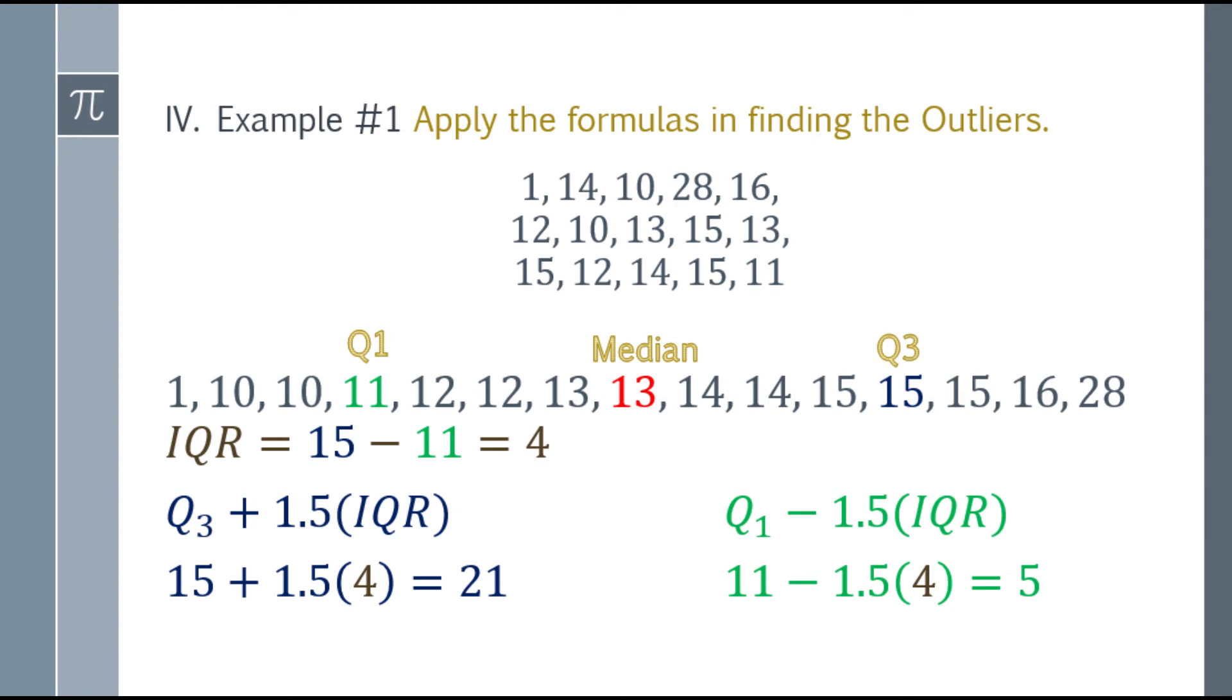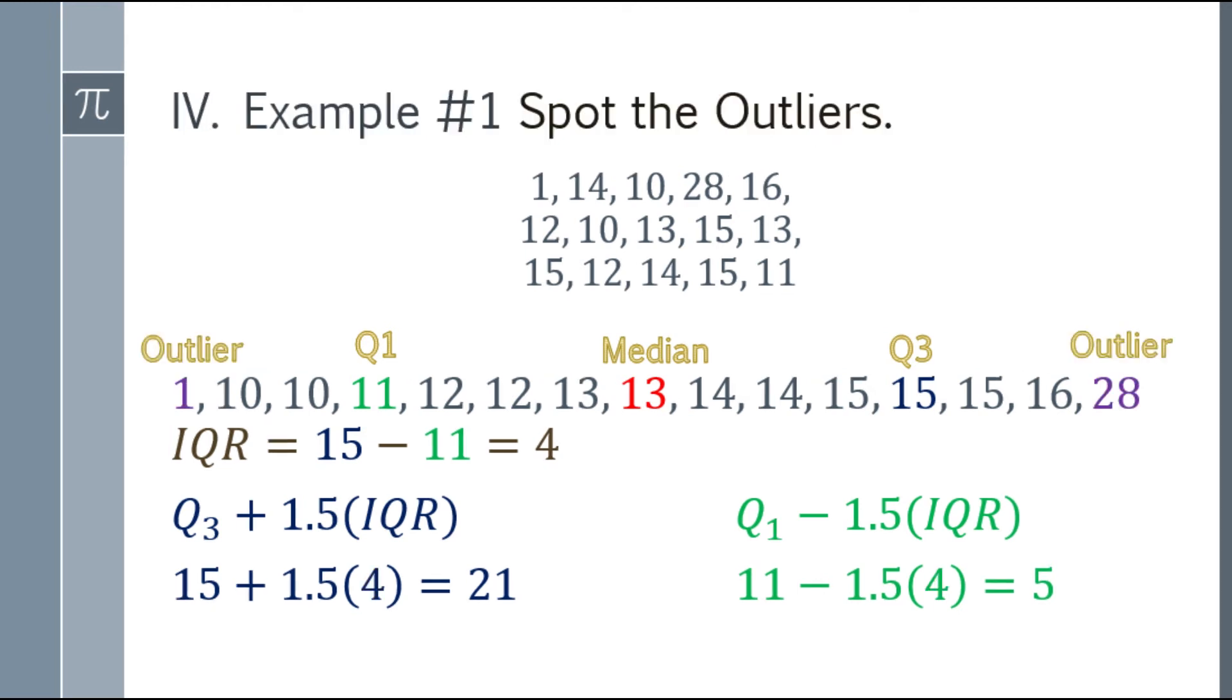Dito alam na natin kung ano yung outliers. Sabi dito, lahat daw ng numbers sa 21 pataas, yun yung mga outliers. At yung 5 pababa, outliers din. Sa data mo, ang mas mataas sa 21 ay 28, so isang outlier na yun. At meron nga rin dito, mas mababa sa 5 or 5 pababa, that is 1. Ang outliers natin dito sa data na to ay 1 at 28.